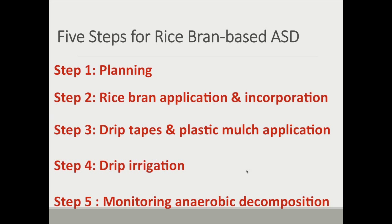If you're going to do ASD, there are five steps: plan when and where you're going to do it, the rice bran application and incorporation, adding the drip tapes and plastic mulch, doing the irrigation, and then importantly, monitoring how well the anaerobic conditions are created.